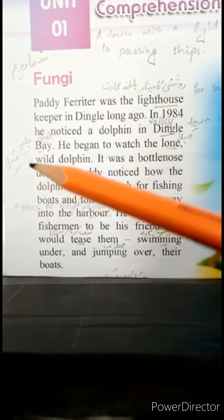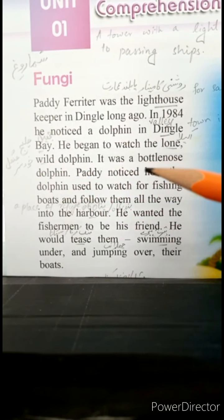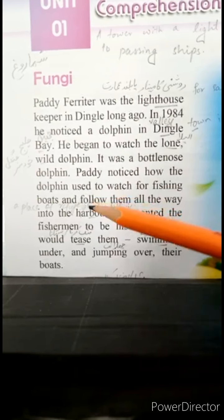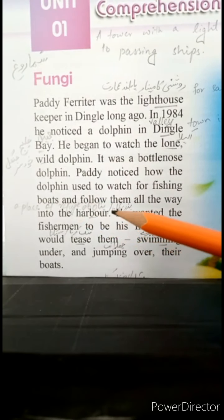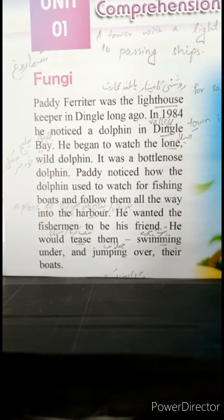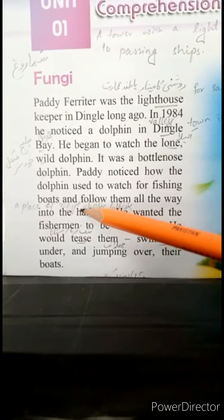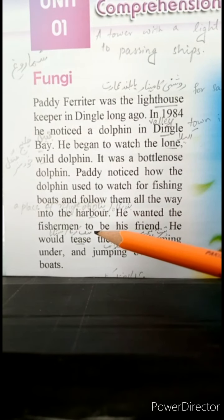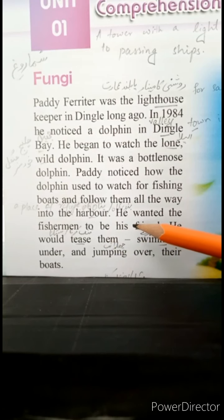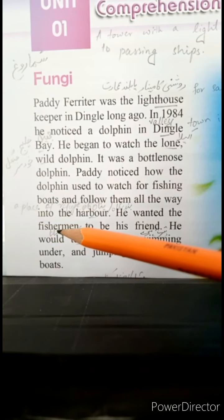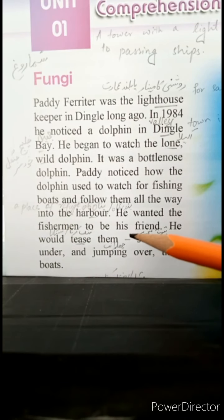'He began to watch the lone wild dolphin.' Us ne is akele aur khudsar dolphin ko dekhna shuru kiya. It was a bottle-nose dolphin — its nose was like a bottle. 'Pedi noticed how the dolphin used to watch for fishing boats' — underline fishing and boats — Pedi ne ghaur kiya keh kis tarah yeh dolphin mahigiri wali kashtiyon ko dekhta tha, 'and follow them all the way into the harbour' — bandargaah tak unka peecha karta tha.